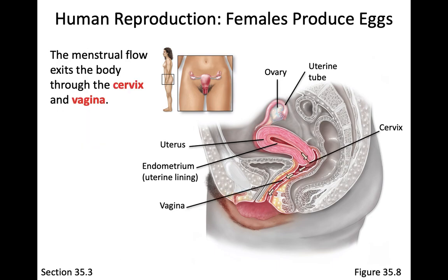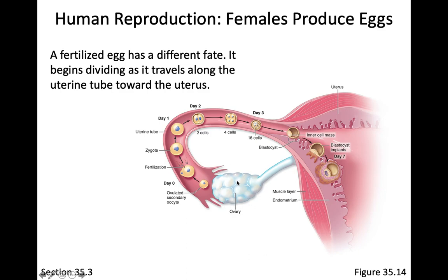The ovary releases the egg during ovulation. In an average female on a month-long cycle, ovulation usually occurs about two weeks after the beginning of the month. Menstruation would occur at the end of the month, and then two weeks after the end of menstruation ovulation usually occurs, and two weeks after ovulation, menstruation usually begins again. The egg travels through the fallopian tubes and becomes fertilized along the way.